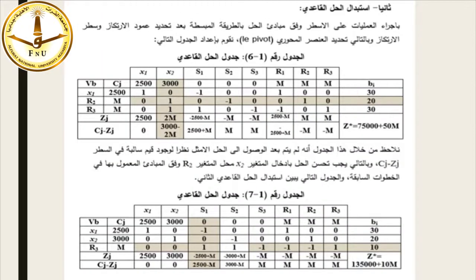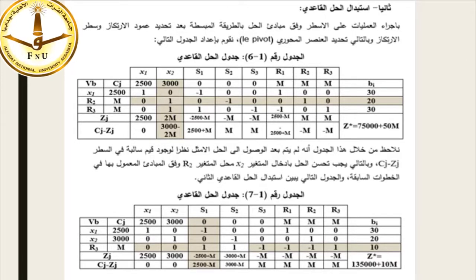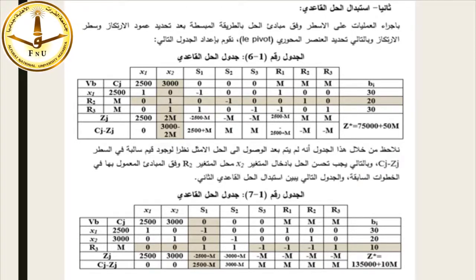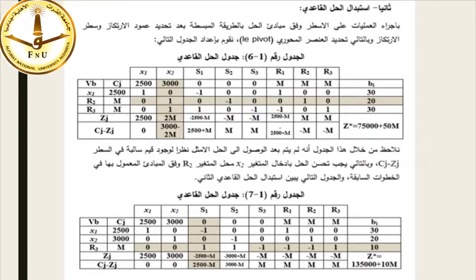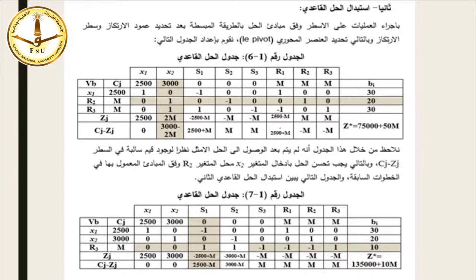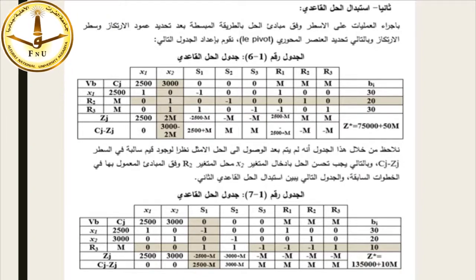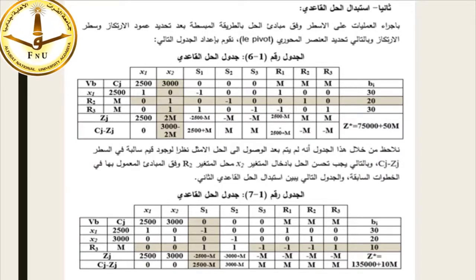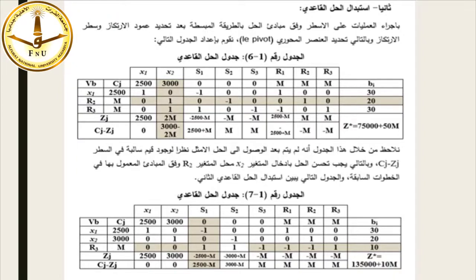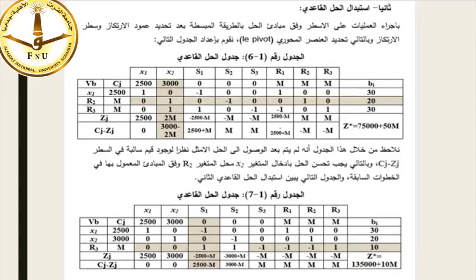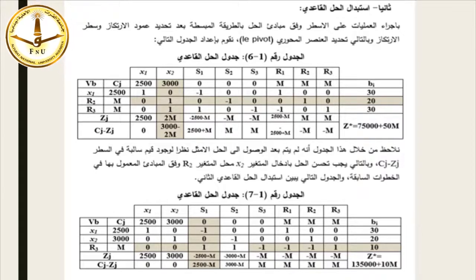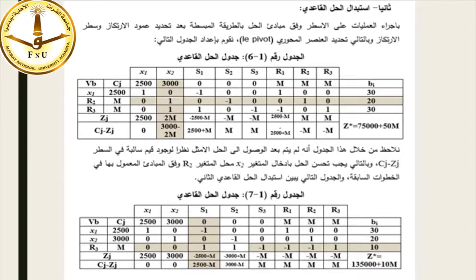ثانياً: استبدال الحل القاعدي بإجراء العمليات على الأسطر وفق مبادئ الحل بالطريقة المبسطة. بعد تحديد عمود الارتكاز وسطر الارتكاز وتحديد العنصر المحوري، نعد الجدول التالي. نلاحظ من خلال هذا الجدول أنه لم يتم بعد الوصول إلى الحل الأمثل نظراً لوجود قيم سالبة في السطر Cj-Zj.